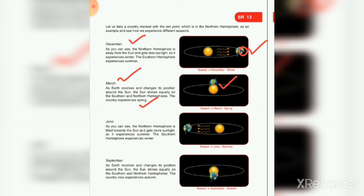In June, the northern hemisphere is tilted towards the sun and gets more sunlight, so it experiences summer. The southern hemisphere experiences winter. In the northern hemisphere, more sunlight is now arriving, so summer occurs, and the opposite part — southern hemisphere — experiences winter because the northern hemisphere has moved closer to the sun.